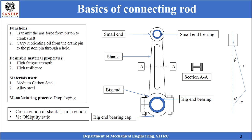Let us now understand the formulae for design of the connecting rod shank. The cross-section of the shank is an I-section whose dimensions are based on a parameter T, which is the thickness of the web and flange. The height of the cross-section is 5T and the breadth is 4T. Two axes, XX and YY, are defined so that we can calculate the various sectional properties about these two axes.